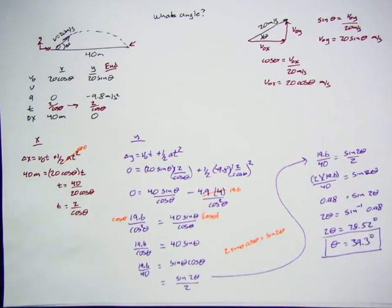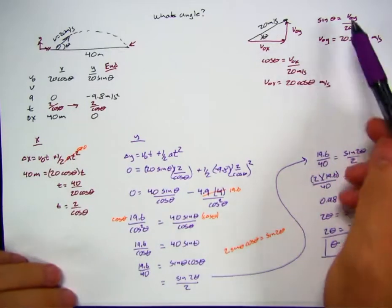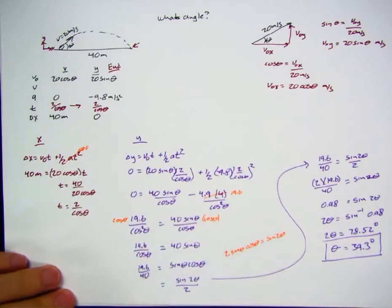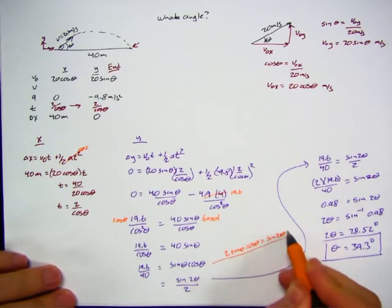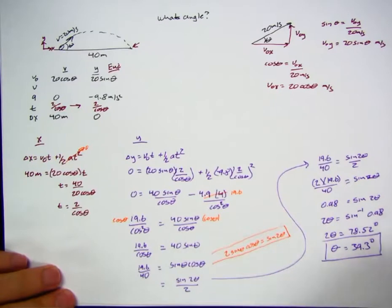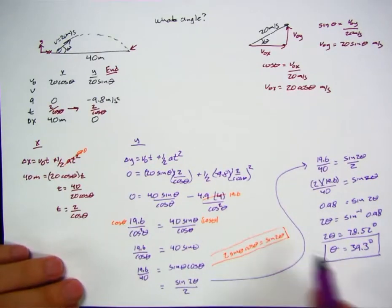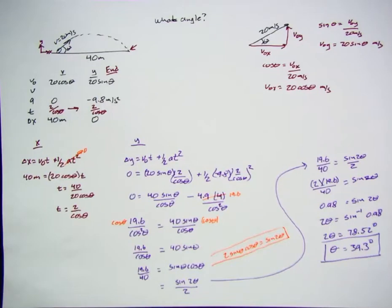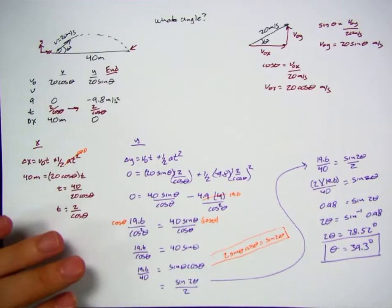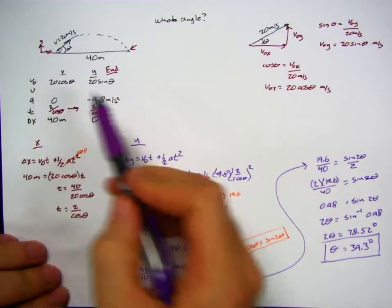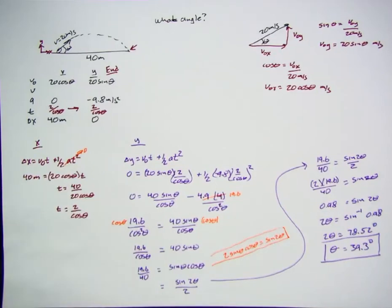That's a nice use of trig and algebra. It was scary at the start because we didn't know theta, and breaking things up gave us thetas everywhere — but all we had to do was carry those thetas around confidently until the trig identity helped us out. I don't expect you to know those identities; if a problem needs one I'll give it to you or we'll look it up. Now that we know theta, we can go back and find maximum height, time in the air, all of that. Don't be afraid of missing variables — just carry them around and you'll be fine.